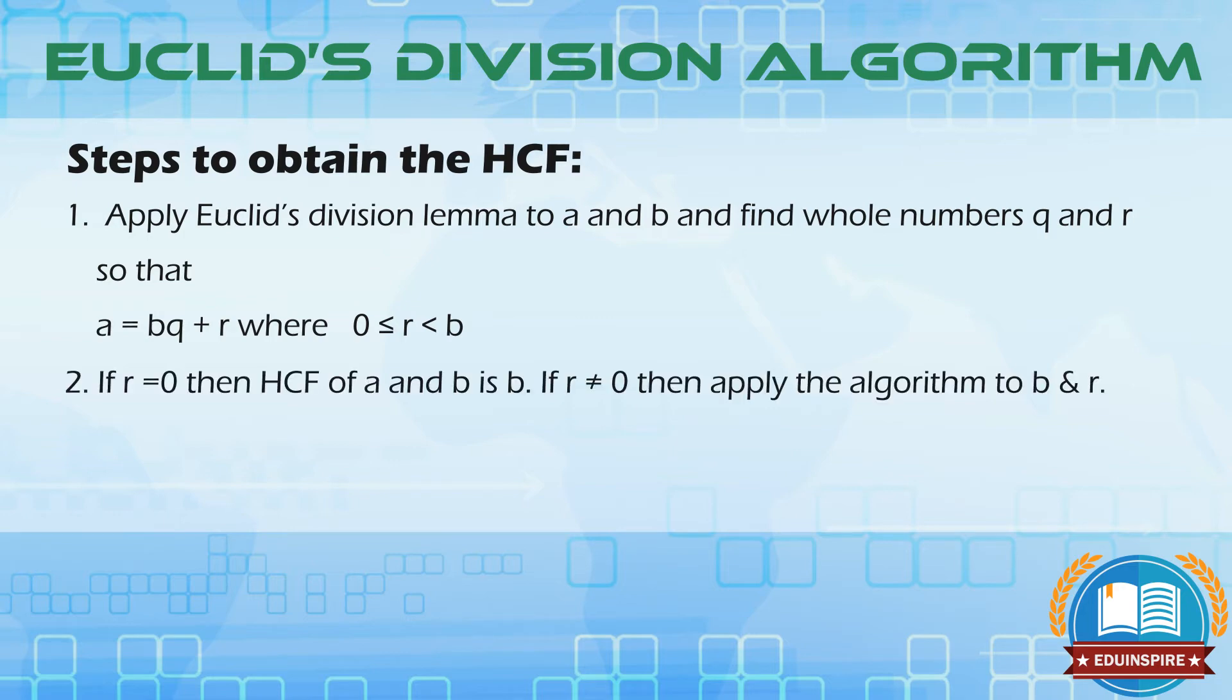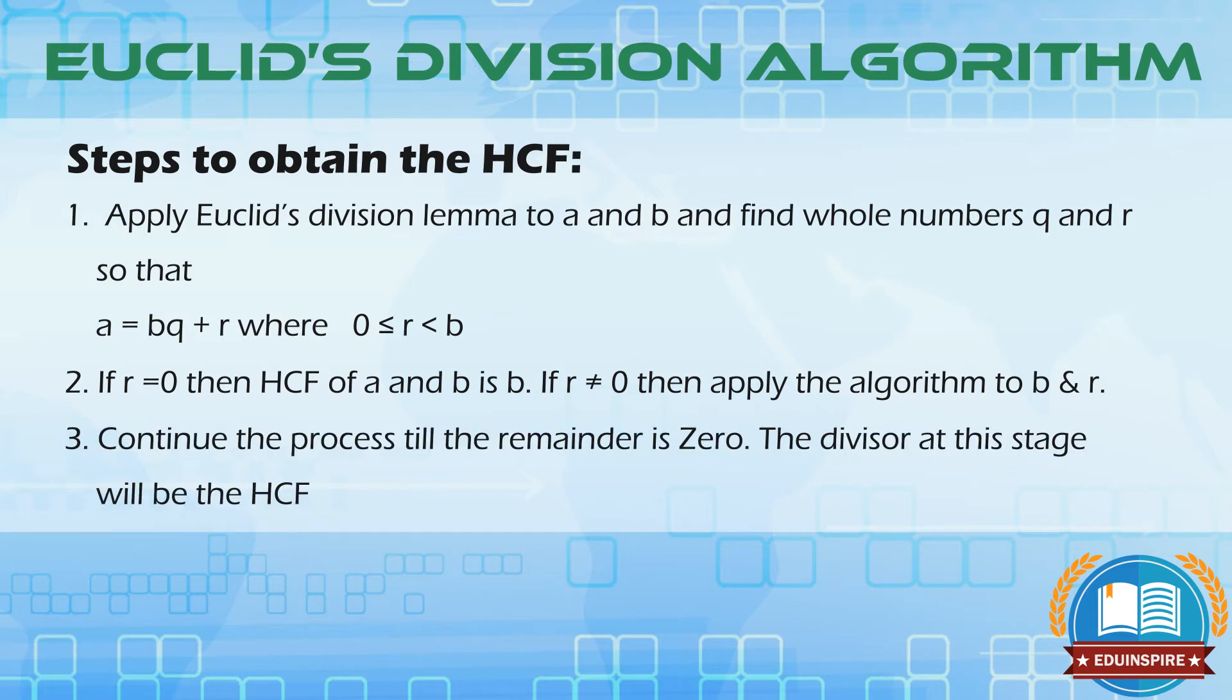Second step: If r equals to zero, then HCF of a and b is b. If r is not equal to zero, then apply the algorithm to b and r.